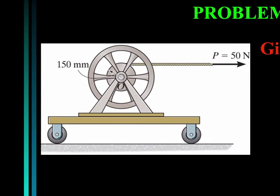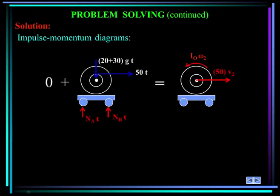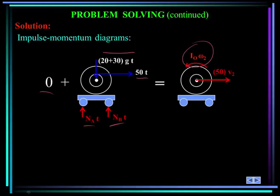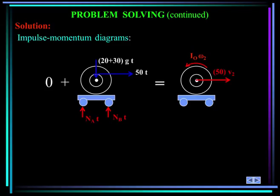Here's another problem. A 300-kilogram reel is mounted on a 20-kilogram cart, starting at rest. A cable wrapped around the inner hub is subjected to a force of 50 newtons. The radius of gyration of the reel about O is 250 millimeters. Find the velocity of the cart and the angular velocity of the reel at four seconds. Again, time is a parameter and we have velocities, so impulse-momentum is recommended. First, let's apply the linear impulse-momentum formula for the system in the x direction.